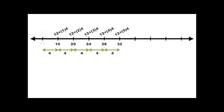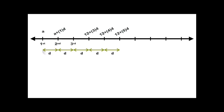If I generalize this: my first term is A and each time I add a number D to get the next term. Then my second term will be A plus 1 times D, and my third term will be A plus 2 times D.